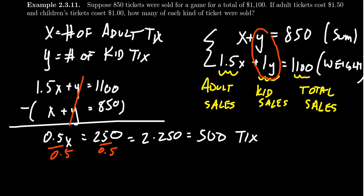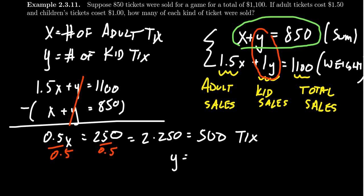Now we have to solve for y. When we look at the original equation, you have x plus y equals 850. We can simply subtract the 500 from the 850. So we have that y is going to equal 850 take away the 500 adult tickets we sold. This is going to give us 350 tickets.